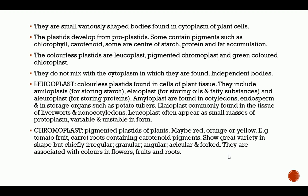Plastids are small, variously shaped bodies found in the cytoplasm of plant cells. They develop from proplastids. Some contain pigments such as chlorophyll and carotenoids; some are centers of starch, protein, and fat accumulation. Proplastids are precursors of plastids found in the embryo stage of the plant. The colorless plastids are leucoplasts, pigmented ones are chromoplasts, and green-colored ones are chloroplasts. They do not mix with the cytoplasm — they are independent bodies.